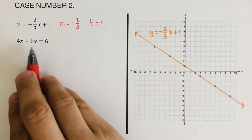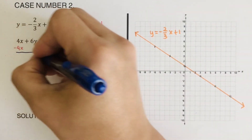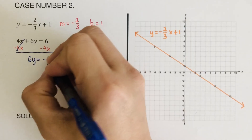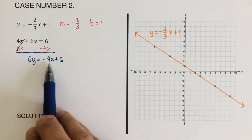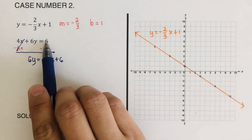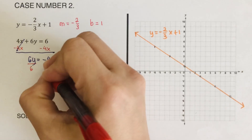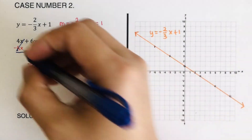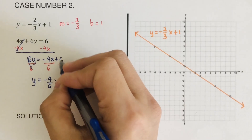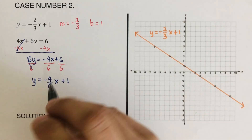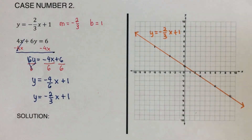Looking at the second equation — since it's not in slope-intercept form, we isolate y by subtracting 4x from both sides. We cross out the 4x and are left with 6y equals negative 4x plus 6. Note: others might say this becomes 2x because 6 minus 4 is 2, but that is not correct — these are unlike terms and cannot be combined. We then divide both sides by 6, giving y equals negative four over six x plus one.